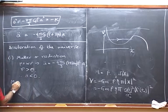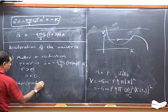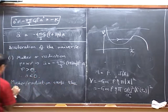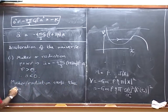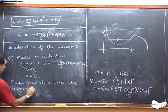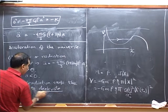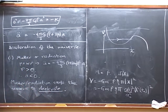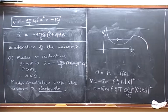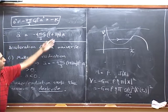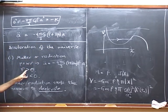Matter and radiation cause the universe to decelerate. This is an extremely important fact - it is a very direct connection with an experimental fact. The acceleration is negative as long as there is an equation of state of this sort with positive density. This is the first comment we should have made upon discovering this equation.